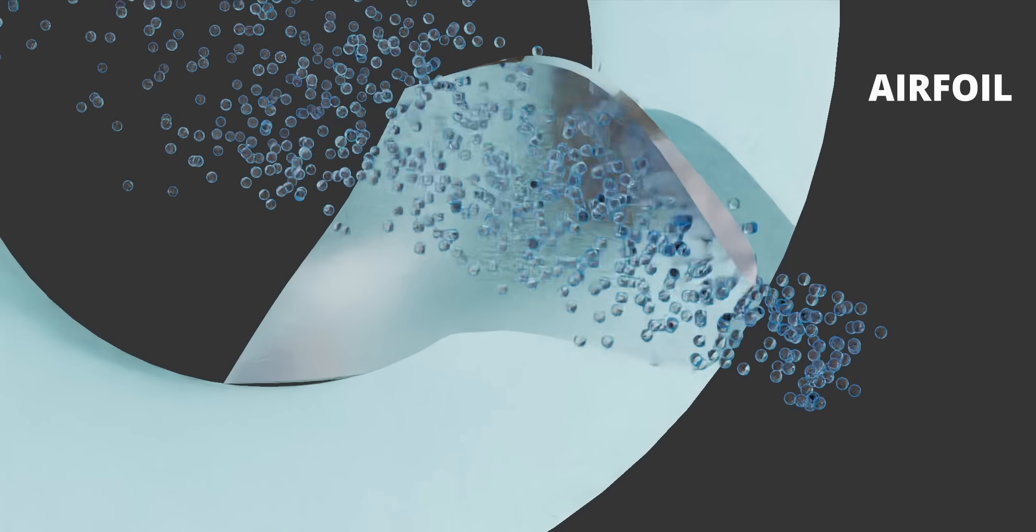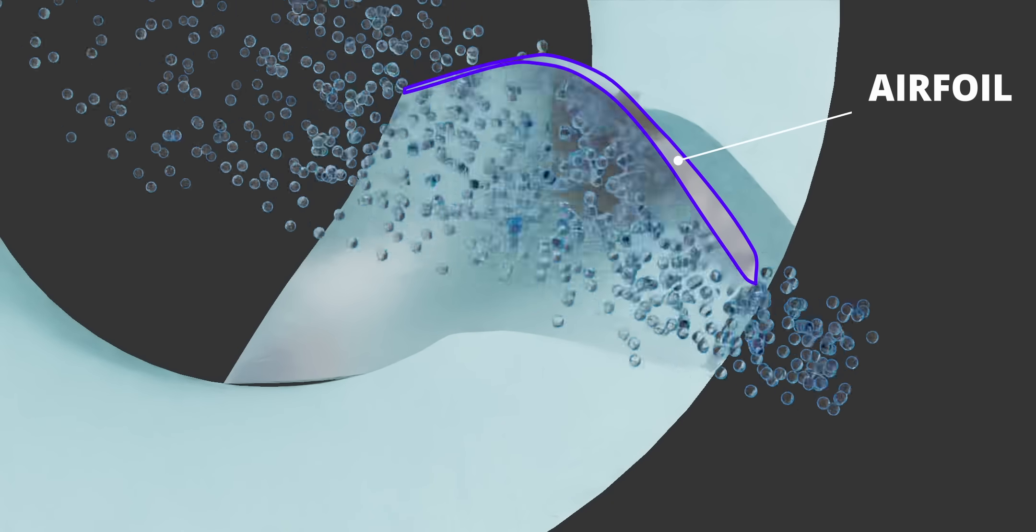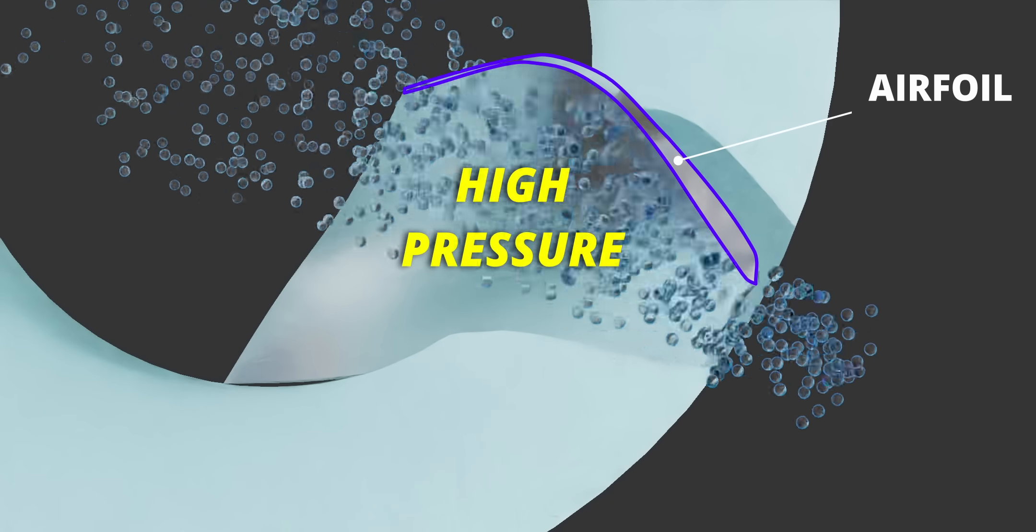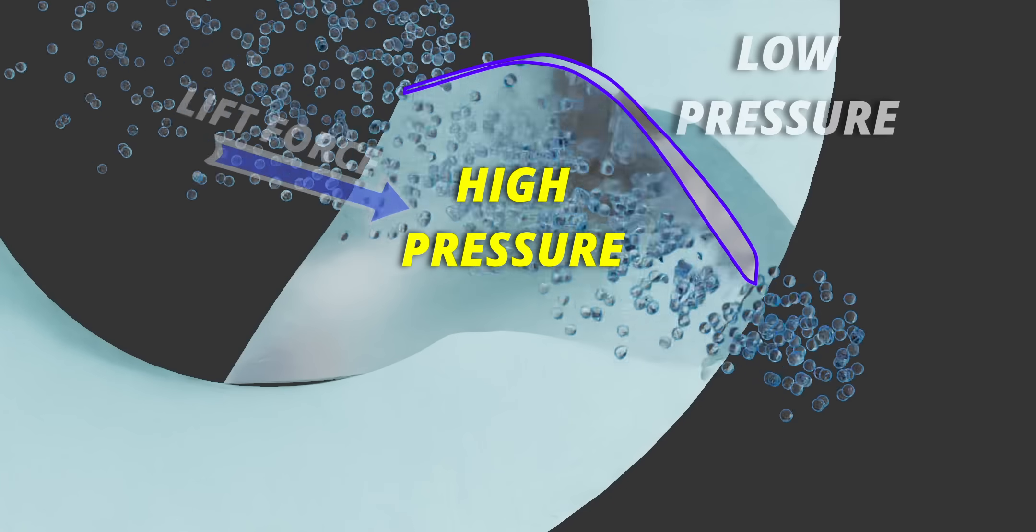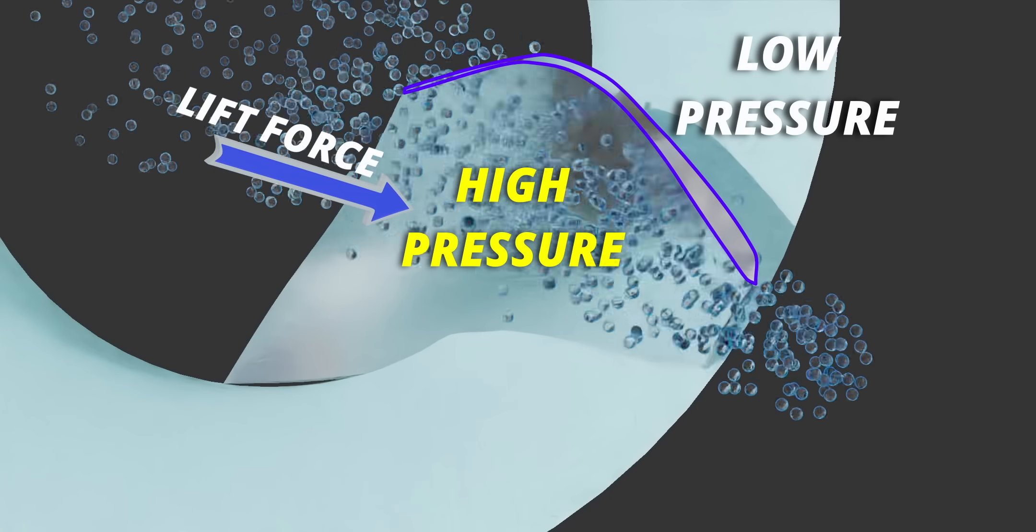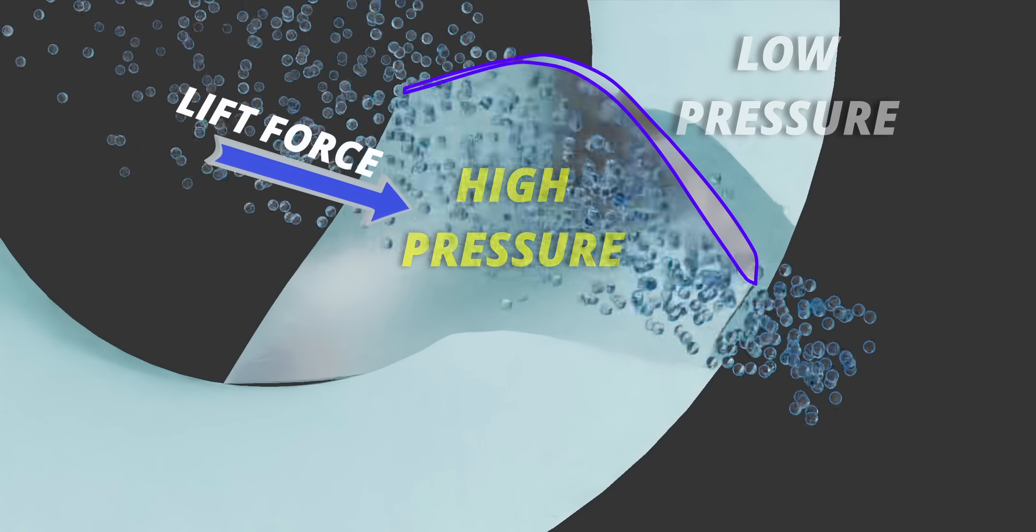Interestingly, this is a clear case of airfoil action. High pressure will be generated at one side of the blade, while low pressure is generated at the other. Obviously, this pressure difference can turn the turbine.